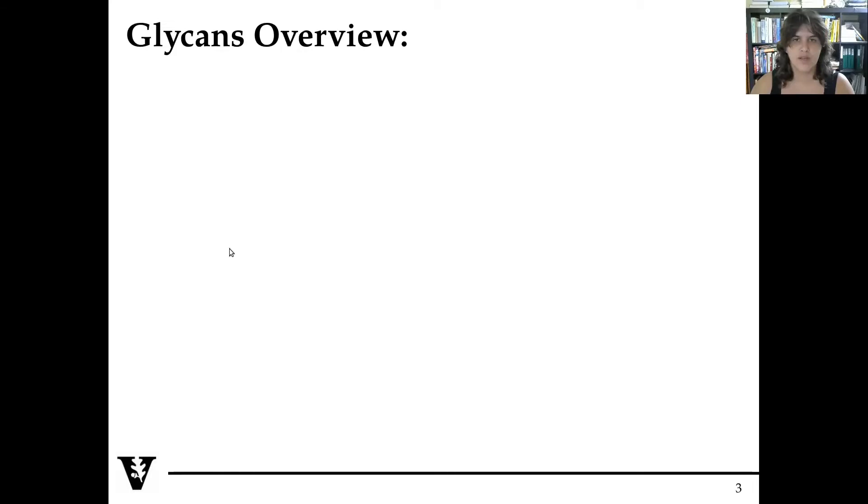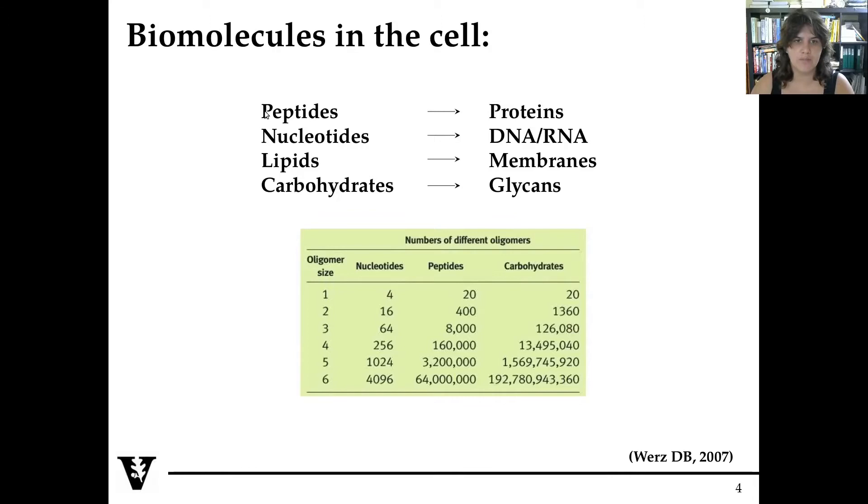Let's start from the basics. In the cell we have four main building blocks: peptides or amino acids, nucleotides, lipids, and carbohydrates. They can associate to form macromolecules like proteins. Nucleotides form nucleic acids. Lipids can associate without being covalently bound to form membranes, but carbohydrates can be covalently bound to form glycans, also known as polysaccharides or sugar chains. If we consider a single monomer, we can have four different combinations of nucleotides, 20 of amino acids, and 20 of carbohydrates, if we consider just the mammalian carbohydrates.